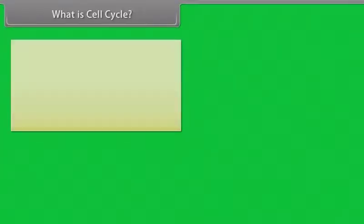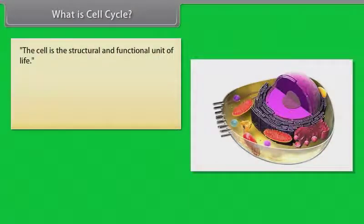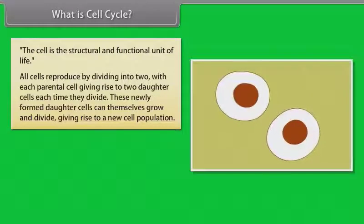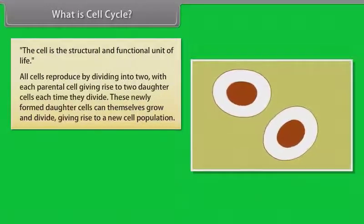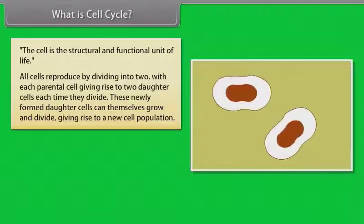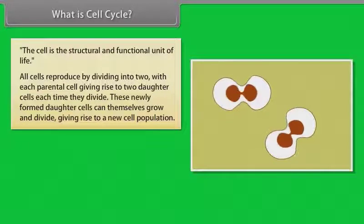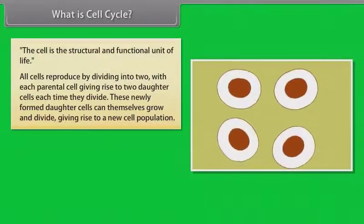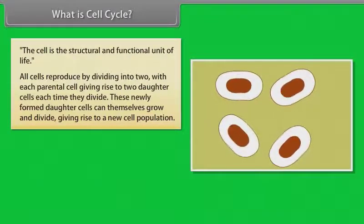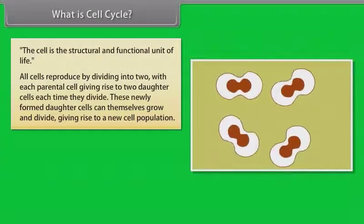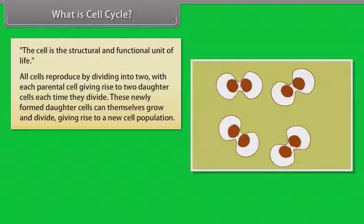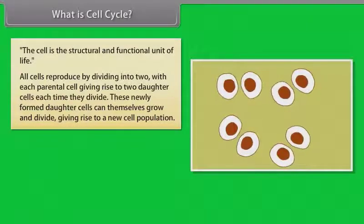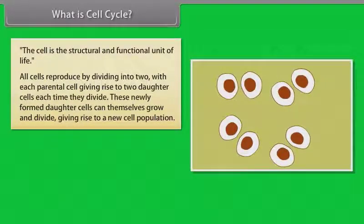What is cell cycle? The cell is the structural and functional unit of life. All cells reproduce by dividing into two, with each parental cell giving rise to two daughter cells. Each time they divide, these newly formed daughter cells can themselves grow and divide, giving rise to a new cell population.